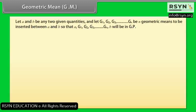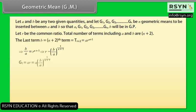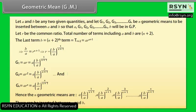Let A and B be any two given quantities, and let G1, G2, G3, ... Gn be n geometric means to be inserted between A and B, so that A, G1, G2, G3, ..., Gn, B will be in GP. Let R be the common ratio. Total number of terms including A and B is n+2. Then G1 = A×R = A×(B/A)^(1/(n+1)), G2 = A×R² = A×(B/A)^(2/(n+1)), and Gn = A×Rⁿ = A×(B/A)^(n/(n+1)).